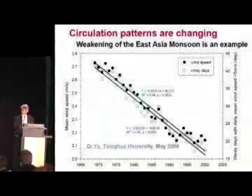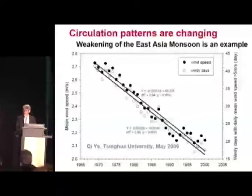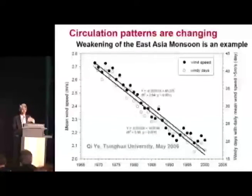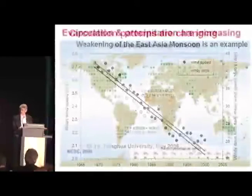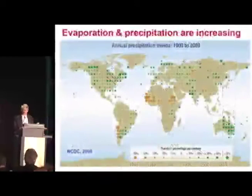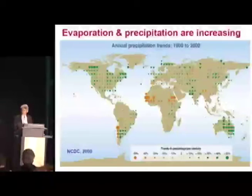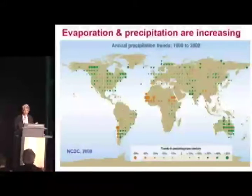As you would expect from non-uniform changes in temperature, circulation patterns are changing. This shows the weakening of the East Asia monsoon over the last 30 years. Chinese climate models have concluded that this phenomenon results from greenhouse gas-driven global climate change. Evaporation and precipitation are increasing on a global average, although not everywhere — some places are getting drier, others wetter.